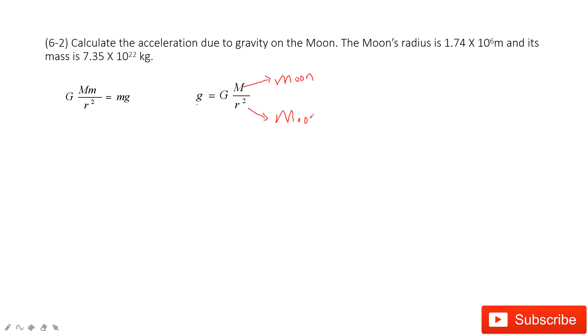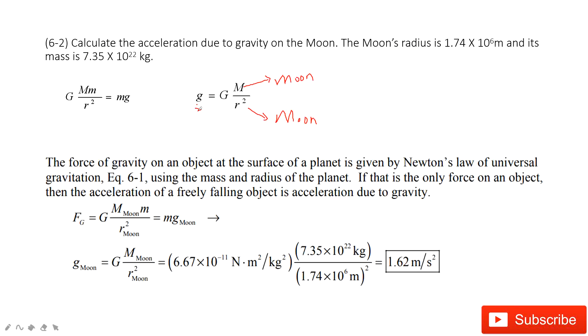So in this one, you can see the radius for the moon is given. The mass of the moon is given. It's easy for you to find g, the acceleration due to gravity on the moon.